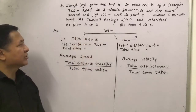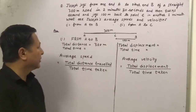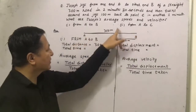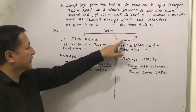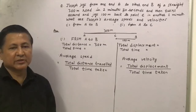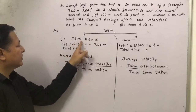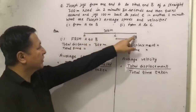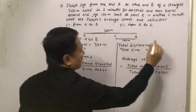What are Joseph's average speed and velocity from A to B and from A to C? In this question, Joseph is jogging from A to B — that is 300m — and then returns back to C, that is 100m. We have to find his average speed and average velocity. First we are taking the case from A to B. The total distance is 300m and displacement will also be 300m.